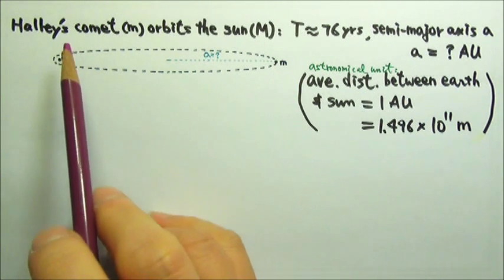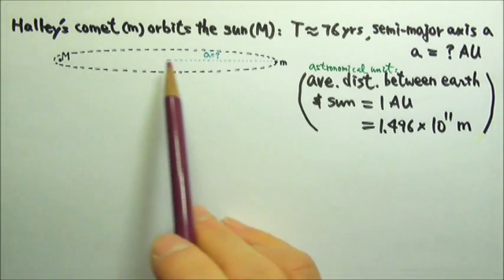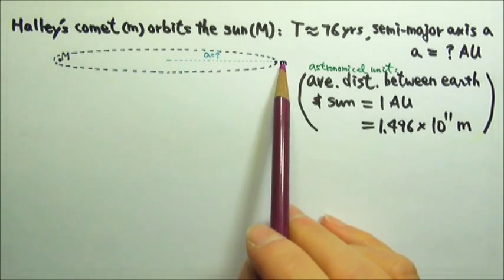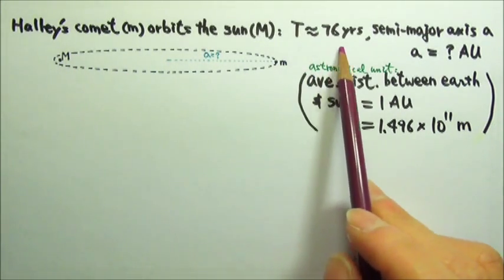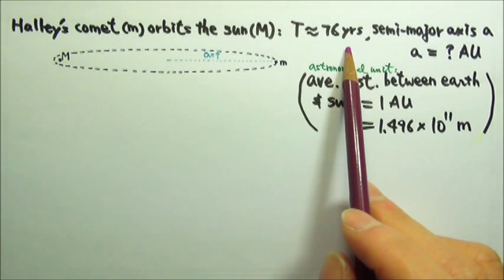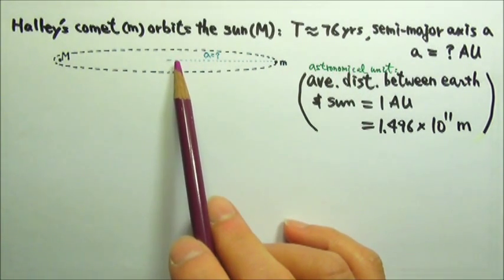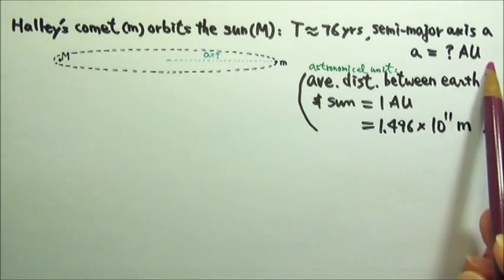Halley's Comet orbits around the Sun in a highly eccentric elliptical orbit with a period of about 76 years. Find the semi-major axis of the elliptical orbit in AU, the astronomical unit.